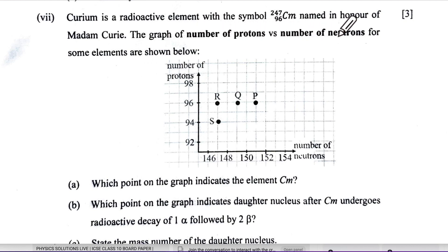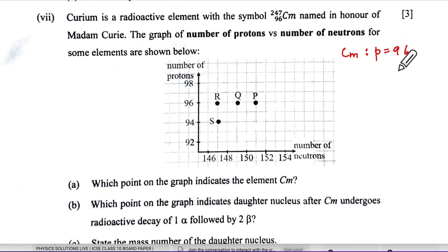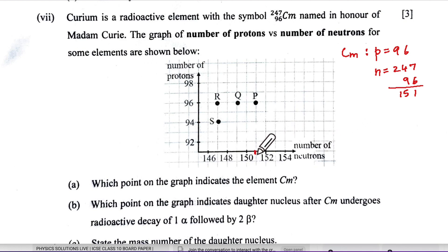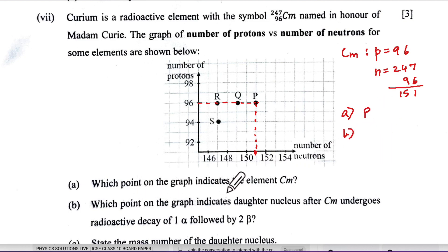Seventh sub-part: curium (symbol Cm, mass number 247, atomic number 96) is named in honour of Madam Curie. A graph of number of protons versus number of neutrons is given. For curium: protons = 96, neutrons = 247 − 96 = 151. Locating protons = 96 and neutrons = 151 on the graph gives point P. So the answer for part a is P.